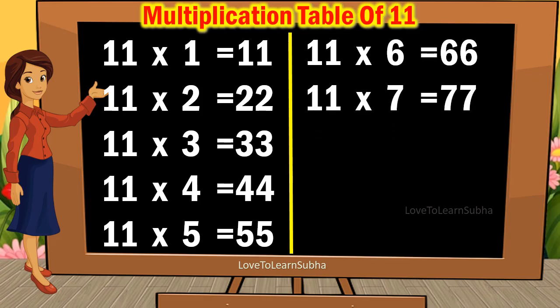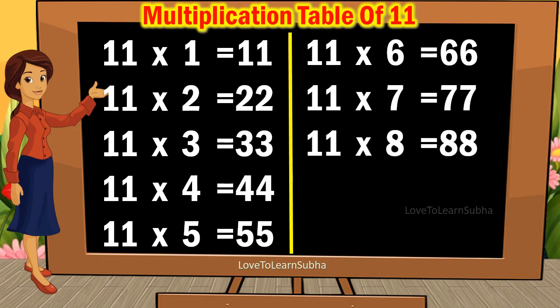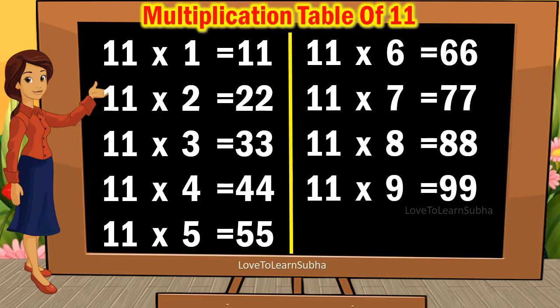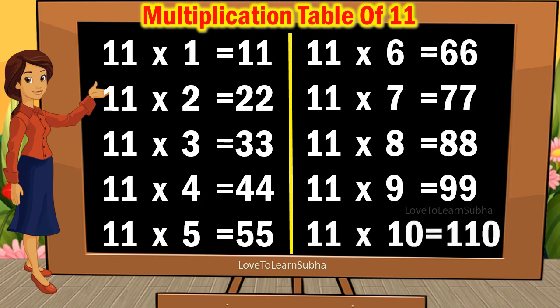11 7s are 77. 11 8s are 88. 11 9s are 99. 11 10s are 110.